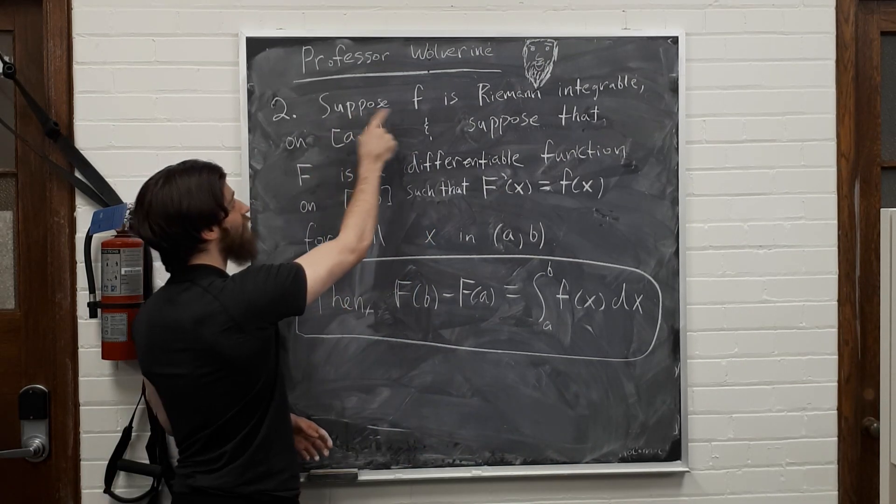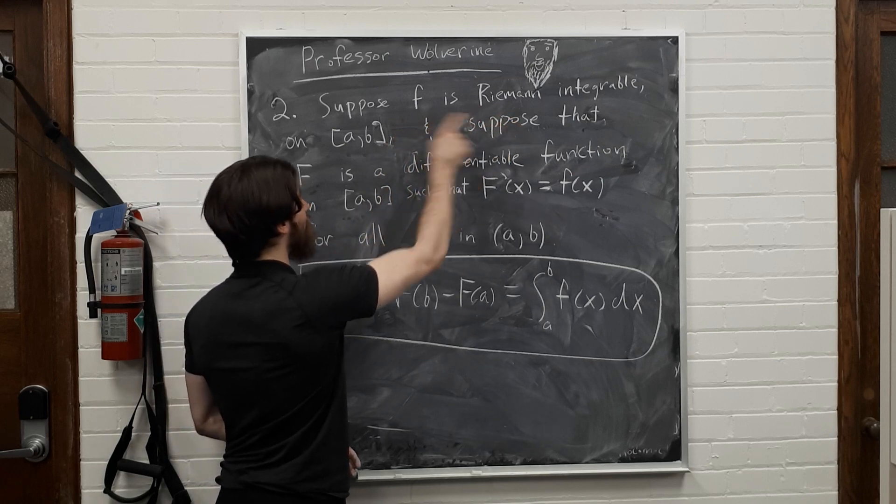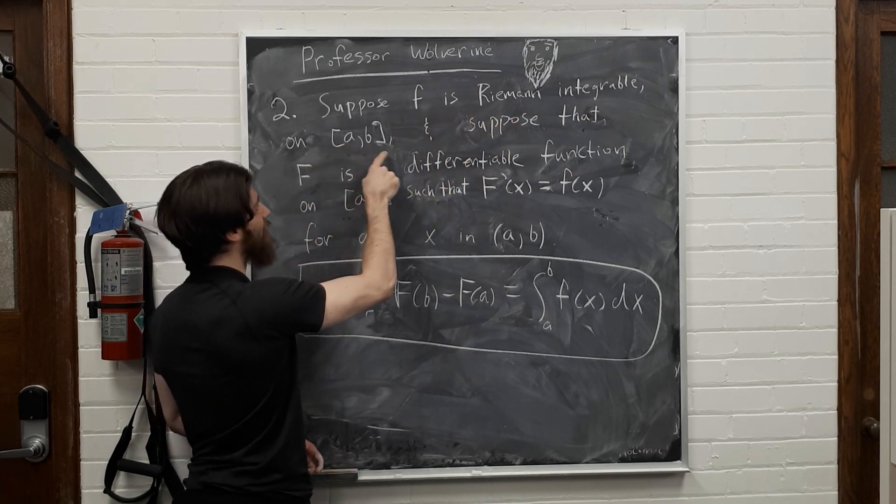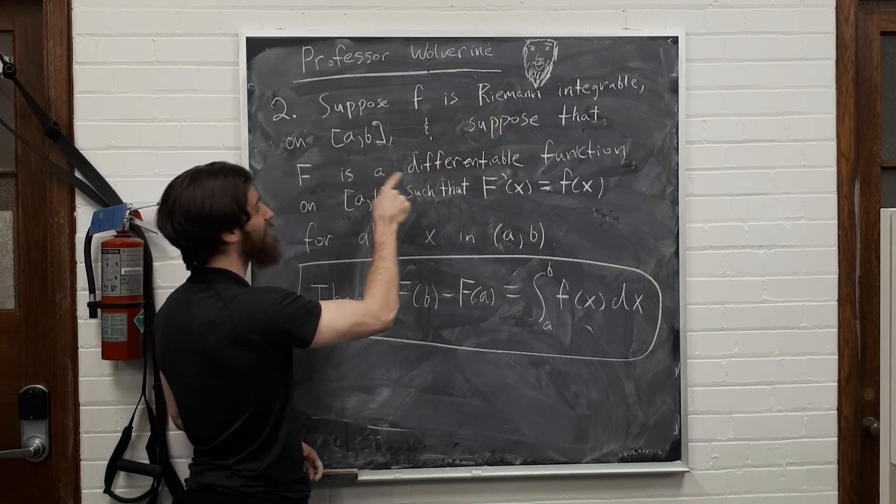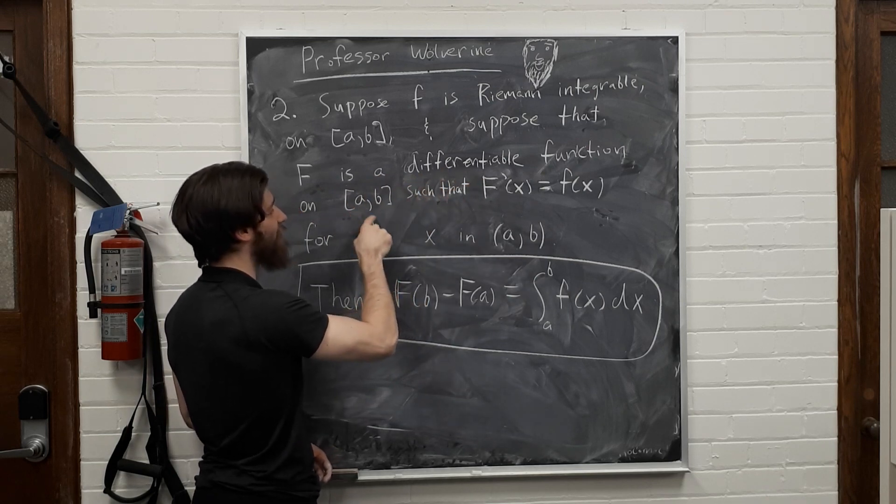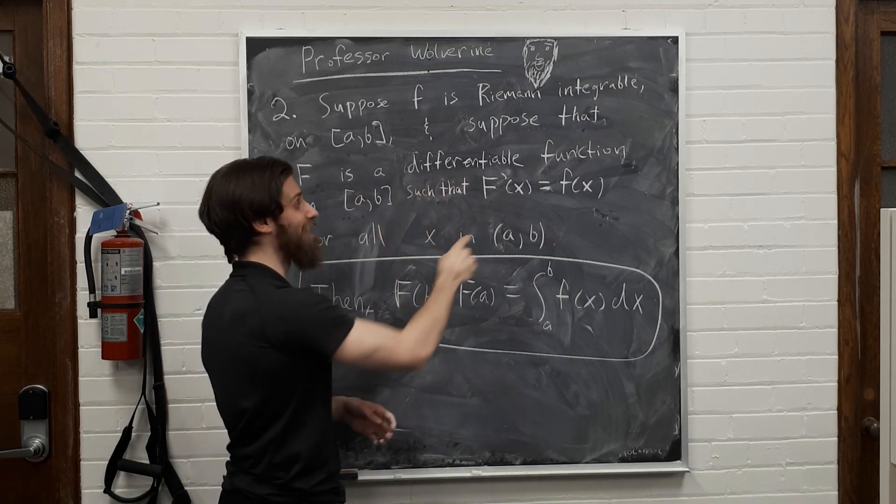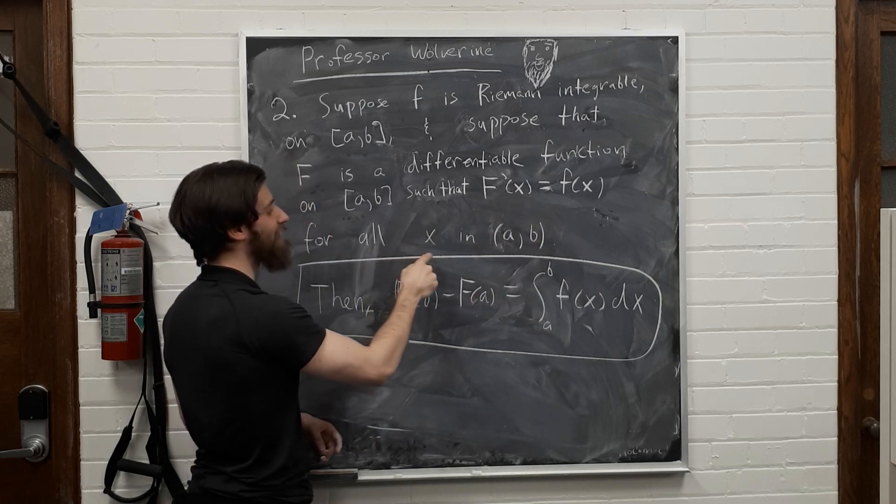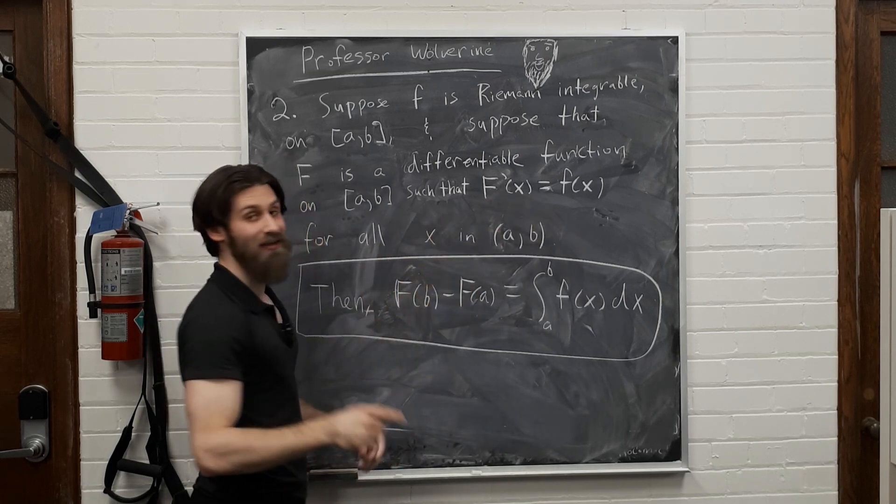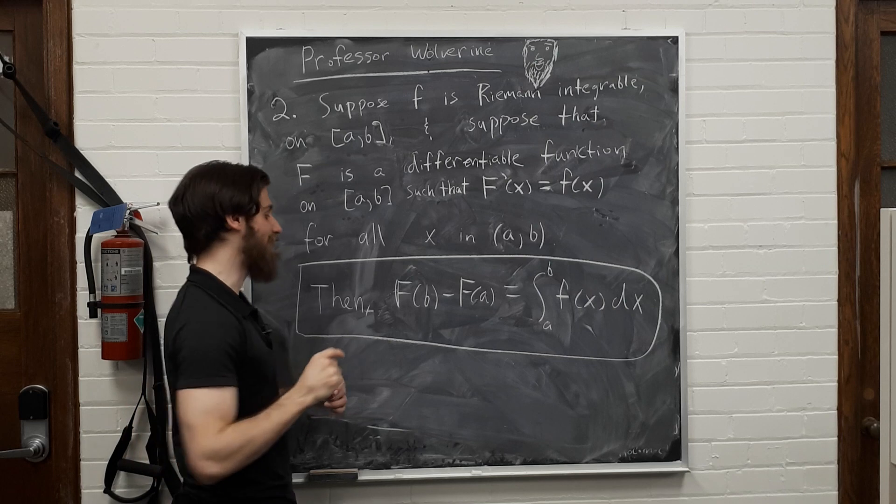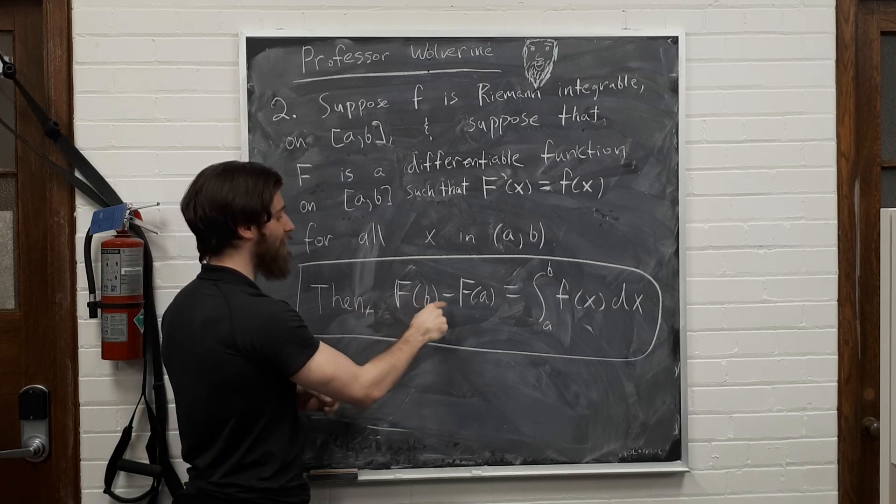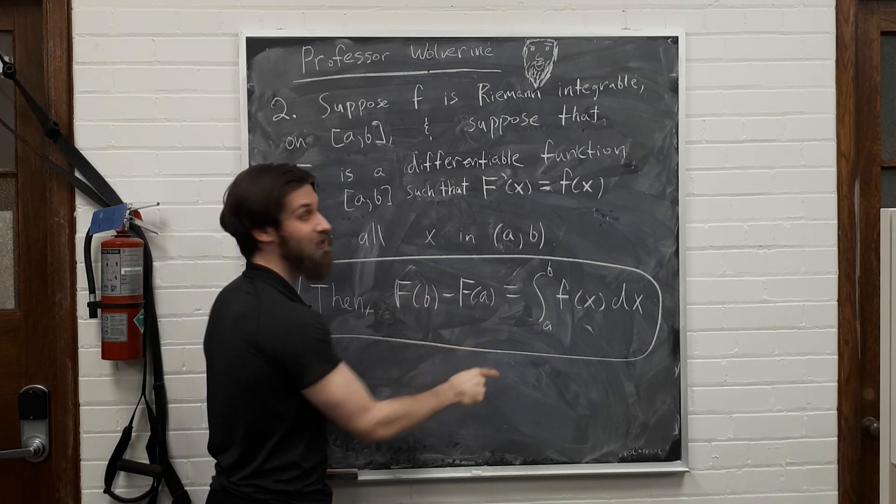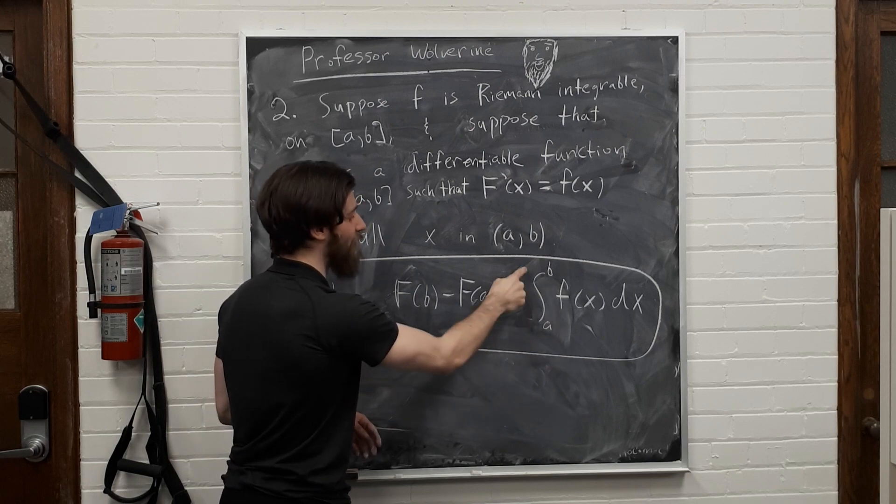All right, let's look at it. Suppose little f is a Riemann integrable function on the closed interval a to b, and suppose that big F is a differentiable function on the closed interval a to b, such that the derivative of big F is equal to little f for all x in the interval a to b. Then the second part of the fundamental theorem of calculus tells you that big F of b minus big F of a is equal to the Riemann integral from a to b of little f.